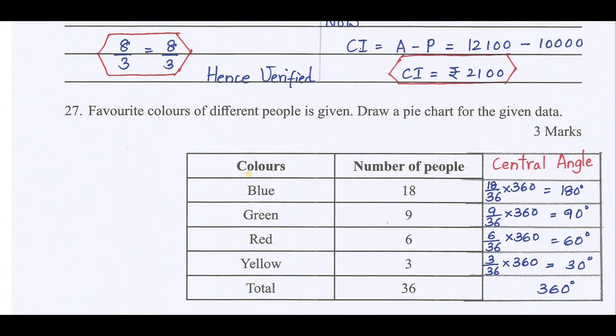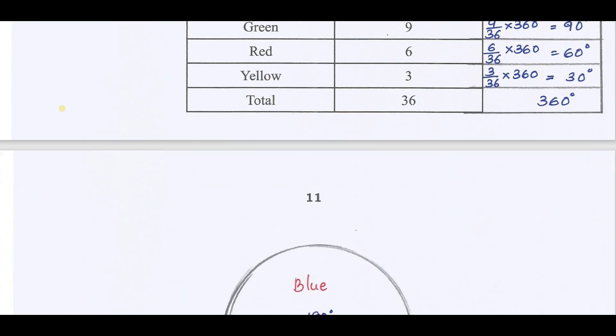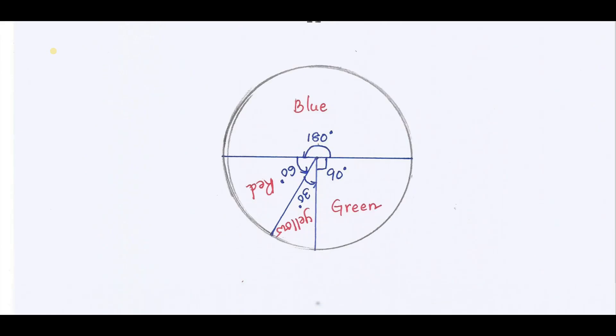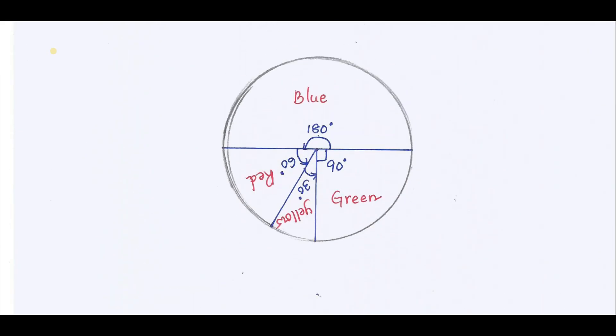Drawing pie chart for 3 marks. Total 18 by 36 into the total central angle. 9 by 36 into 360, 6 by 36 into 360, 3 by 36 into 360. We get these angles. By using protractor and ruler, we can draw this very easily.